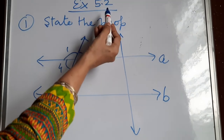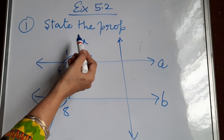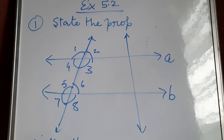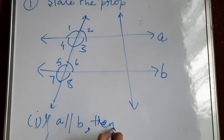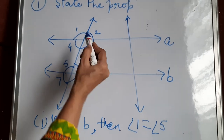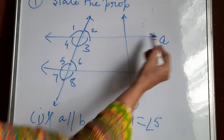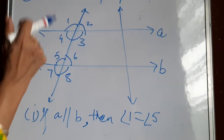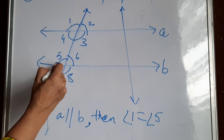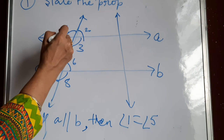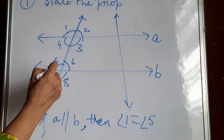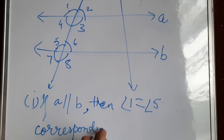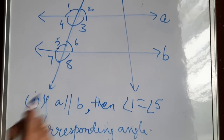Now come to Exercise 5.2, Question 1: state the property used in each of the following statements. Statement (i): if A is parallel to B, then angle 1 equals angle 5. Lines A and B are parallel with a transversal. Angle 1 and angle 5 are corresponding angles, so the property is the corresponding angles property.